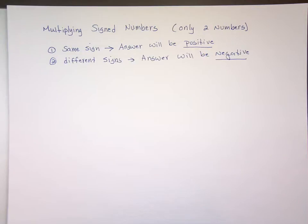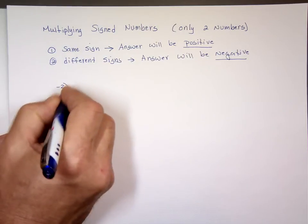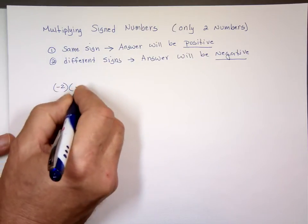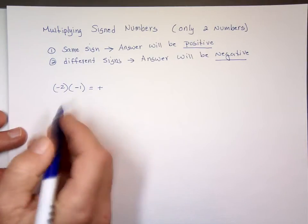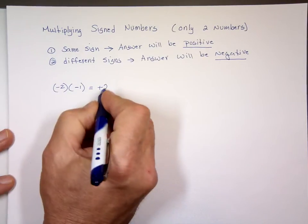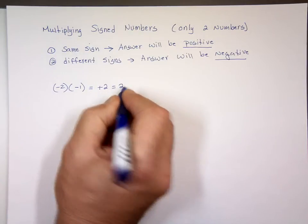So let's take some examples — just multiplication today. What's negative two times negative one? Are these numbers the same sign or different signs? Same. So the answer is going to be positive. You multiply the absolute values: two times one is two. We never write plus two — we always just say two.